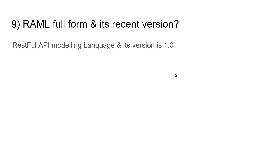The ninth question is: what is the full form of RAML and its current version? The full form is RESTful API Modeling Language and the current version is 1.0.